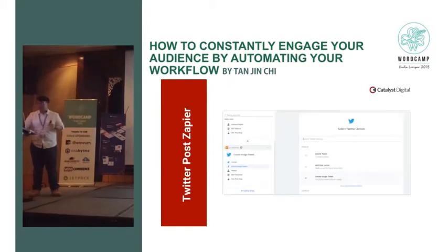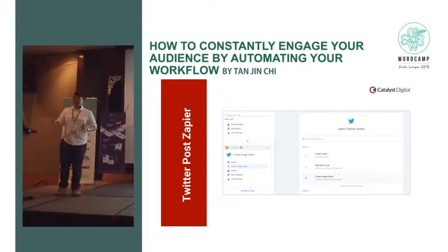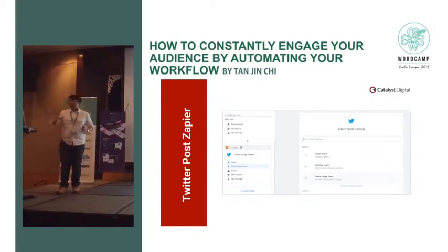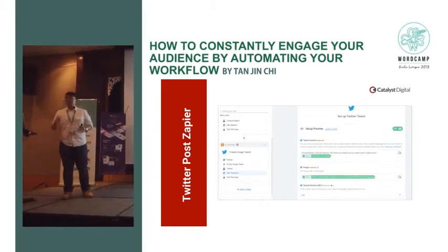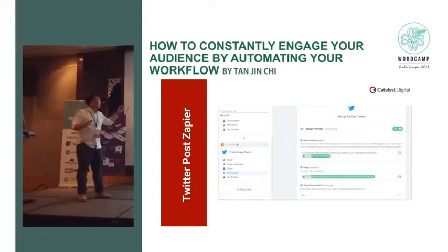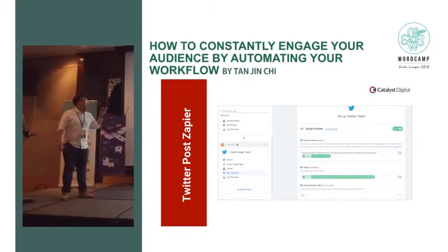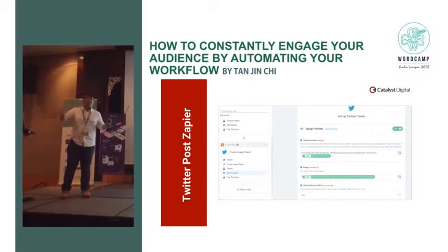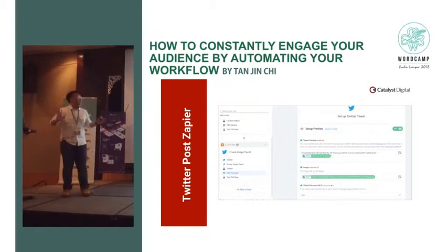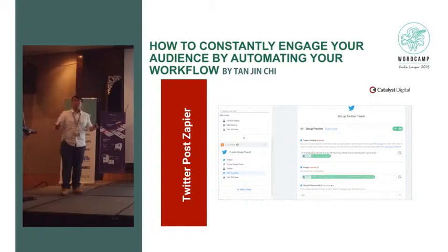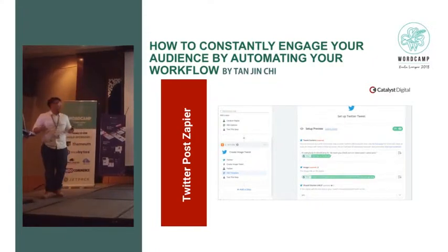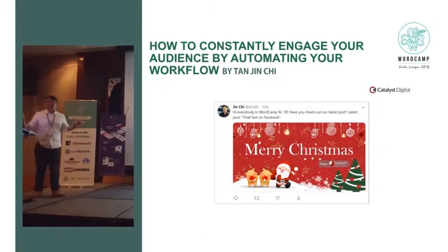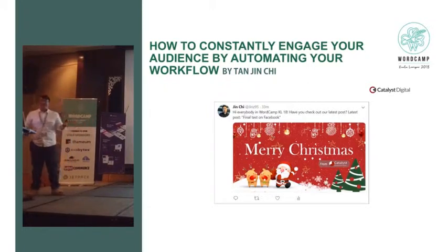Twitter works the same way. You tell Zapier to trigger when you add a new post, and then you tell Twitter to create an image tweet for you. I set my tweet content to: 'Hi everybody at WordCamp KL, have you checked out our latest post?' Then I put the title using the green short code — it substitutes the title for you. The image is linked to the featured image, so every time you put an image in your WordPress post it posts it to Twitter too. You don't have to go back and forth across multiple social media platforms, and it resizes images for you.